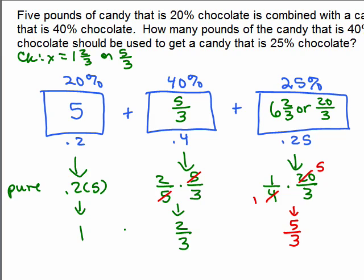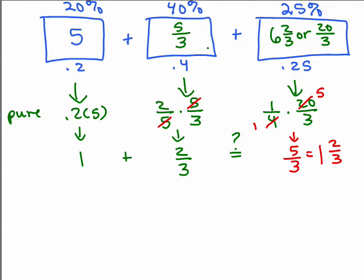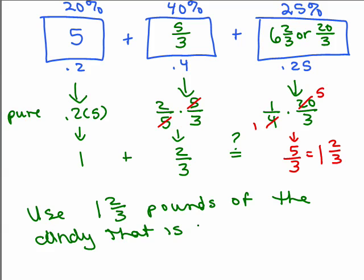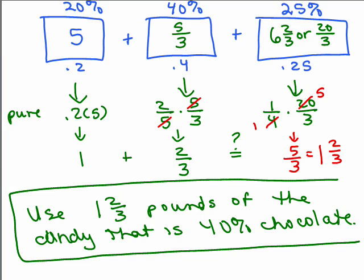So the question is, what this is talking about is how much pure chocolate is in each of these containers. I've got 1 pound of pure chocolate from this container, 2/3 pounds of pure chocolate from the second container. Is that the same as 5/3? Well, 5/3 is 1 and 2/3, isn't it? So yes, it does equal. So the answer to the problem is, we want to know how much chocolate of the 40%, so use 1 and 2/3 pounds of the candy that is 40% chocolate.